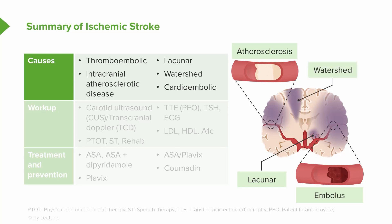The last type of ischemic stroke is the watershed stroke. This doesn't come from a blood clot — it's the one ischemic stroke that's not from a clot in a blood vessel, but from reduced blood flow. We see this in areas where vascular beds are collateralizing, at those collateral watershed territories in between major vessels that are supplying the brain.